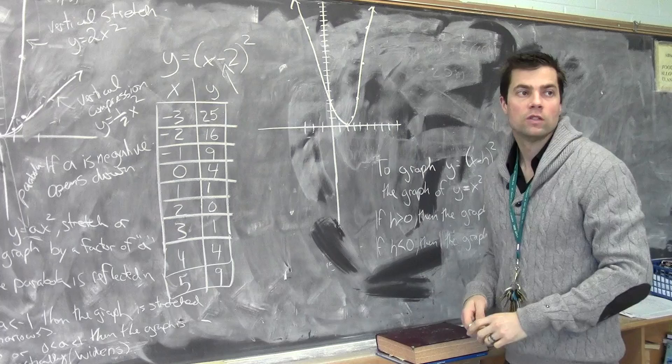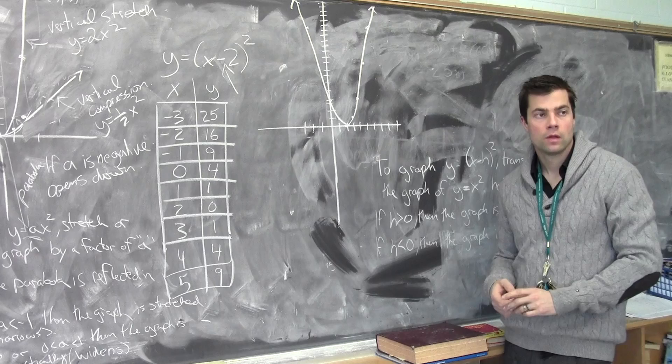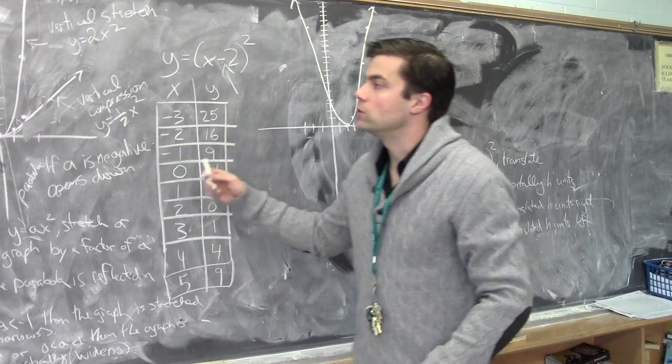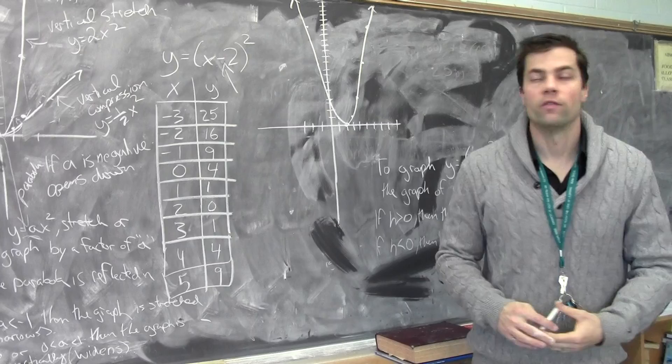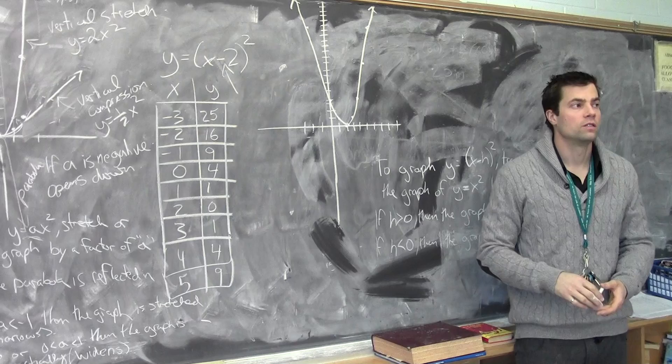A student asks: if it's in brackets it moves on the x-axis, and if it's not, it moves on the y-axis? That's right. In y, it goes the direction of the sign — positive 3 goes up, negative 3 goes down. Whereas in the horizontal direction, it goes opposite to the equation: when it's in brackets as negative 2, it actually moves two units to the right.